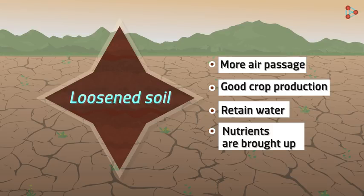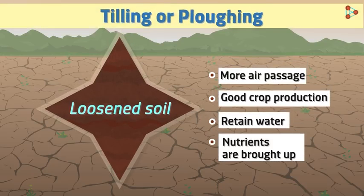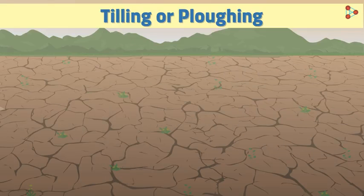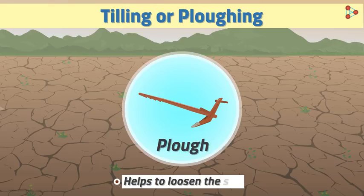So, what is this process of loosening and turning of soil called? We call it tilling or ploughing in agriculture. How is tilling and ploughing done by man? Have you heard the name of an equipment called plough? Yes, I am sure you have. It helps to loosen the soil.